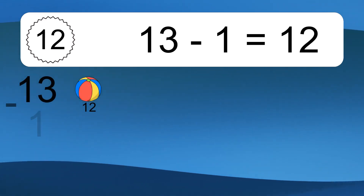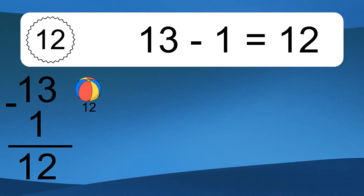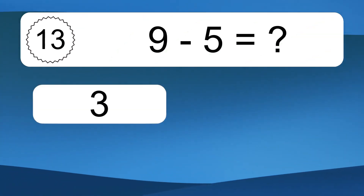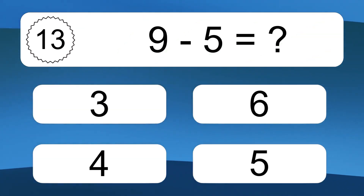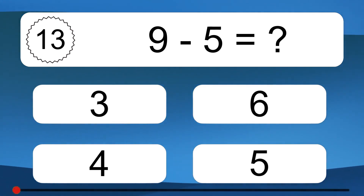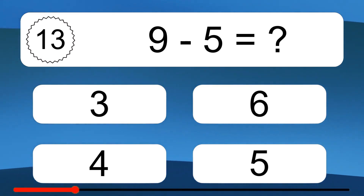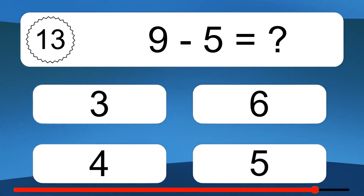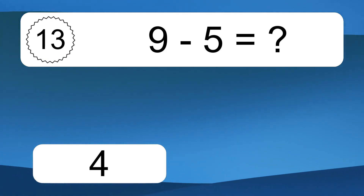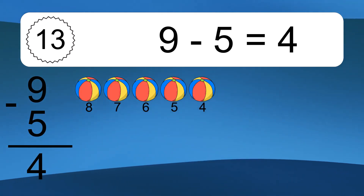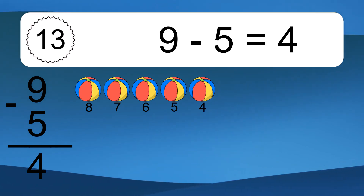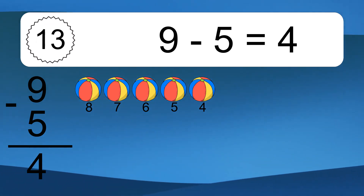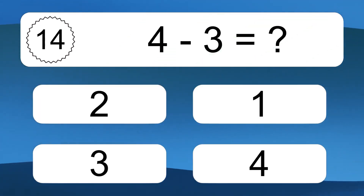13 minus 1 equals 12. Let's count it: 12. 9 minus 5 equals what? 9 minus 5 equals 4. Let's count it: 8, 7, 6, 5, 4.